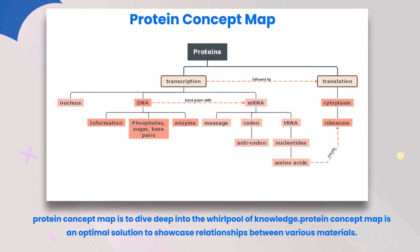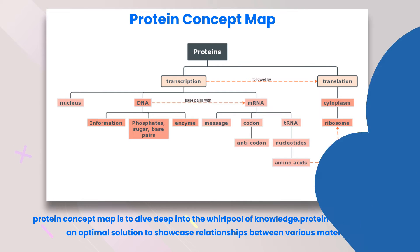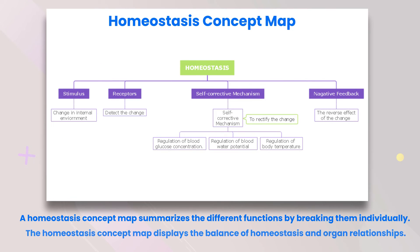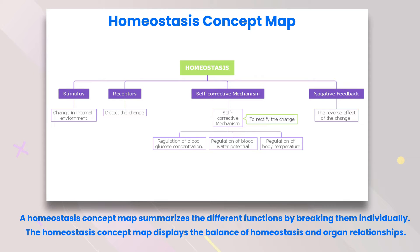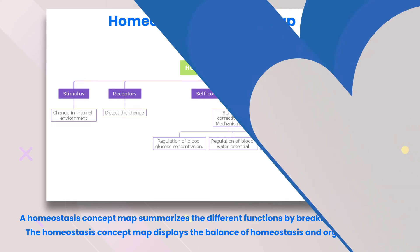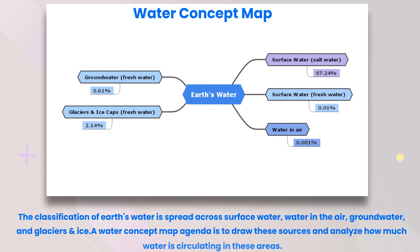Protein concept map: the protein concept map is an optimal solution to showcase relationships between various materials, allowing you to dive deep into the knowledge of proteins. Homeostasis concept map: a homeostasis concept map summarizes the different functions by breaking them down individually.